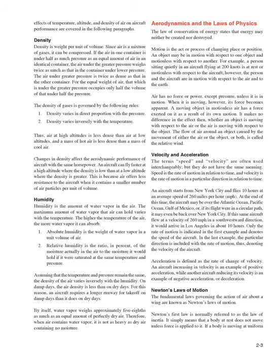Density: Density is weight per unit of volume. Since air is a mixture of gases, it can be compressed. If the air in one container is under half as much pressure as an equal amount of air in an identical container, the air under greater pressure weighs twice as much and is twice as dense. The density of gases is governed by these rules: density varies in direct proportion with the pressure, and density varies inversely with the temperature. Thus, air at high altitudes is less dense than air at low altitudes, and a mass of hot air is less dense than a mass of cool air. An aircraft can fly faster at high altitude where density is low because air offers less resistance when it contains fewer air particles per unit of volume.